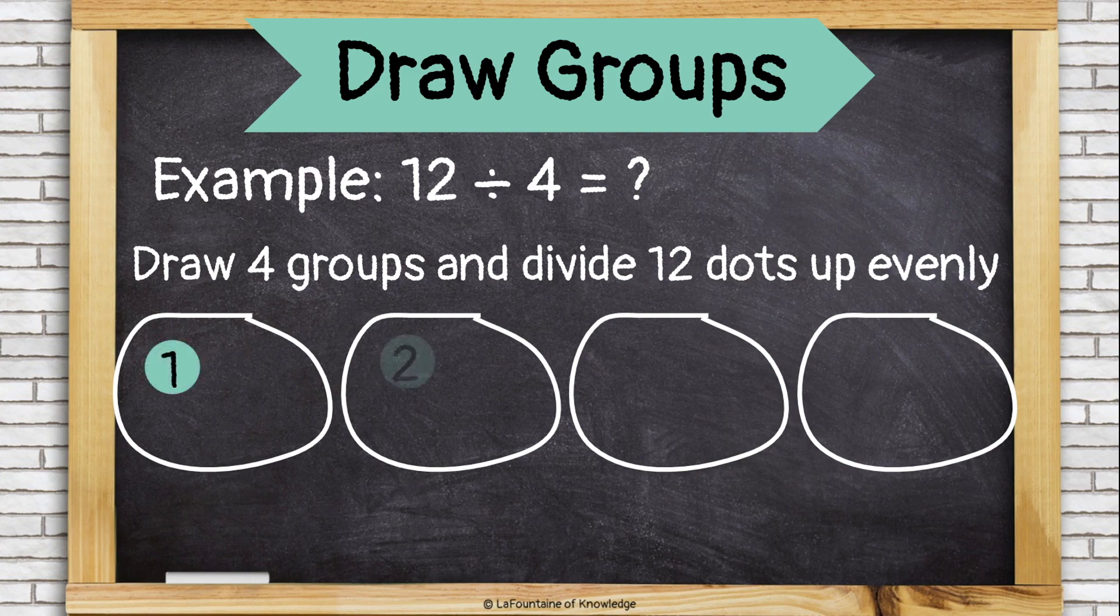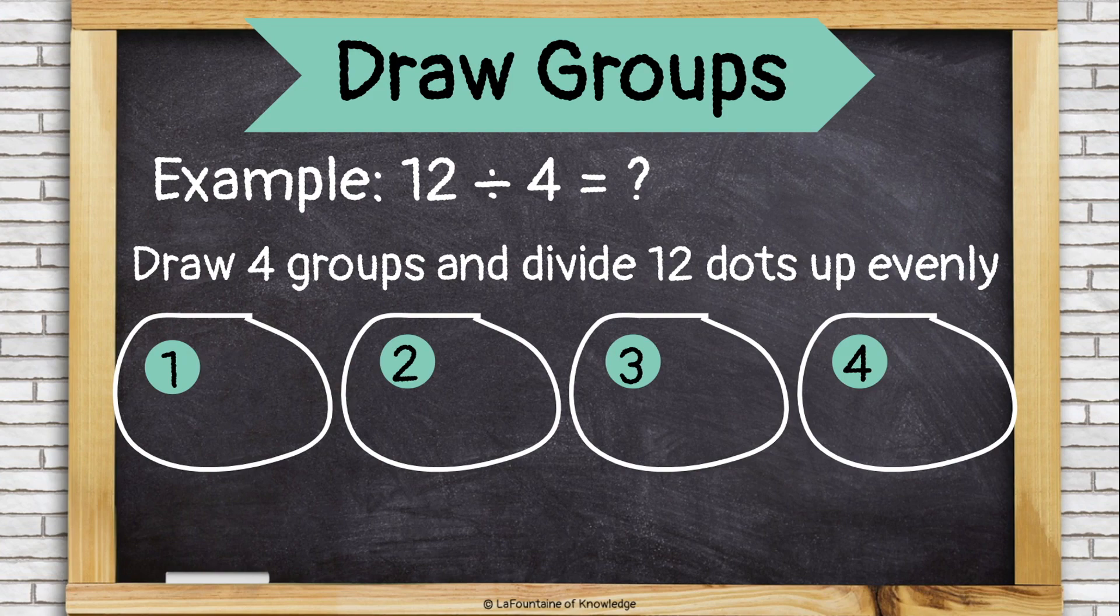One for you, one for you, one for you, and one for you. Now I've used up four of my dots, but I have 12 dots, so I'm going to keep going until I use up all 12 dots, making sure to keep the groups even by giving out the dots like I'm dealing cards.